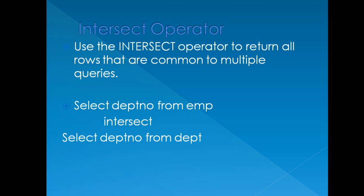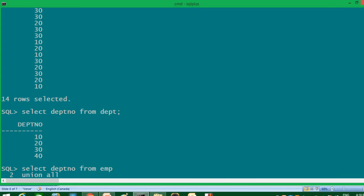My next operator is the INTERSECT operator. Use INTERSECT to return all rows that are common to multiple queries — it returns common rows across all queries used with INTERSECT. For example, SELECT department_number FROM EMP INTERSECT SELECT department_number FROM DEPT will display common values in both department number columns. Common values in both tables are 10, 20, 30 — 40 is not common — so INTERSECT should not display 40, only 10, 20, 30.